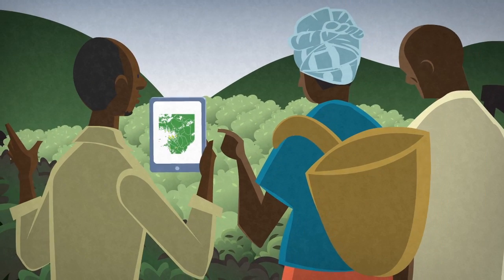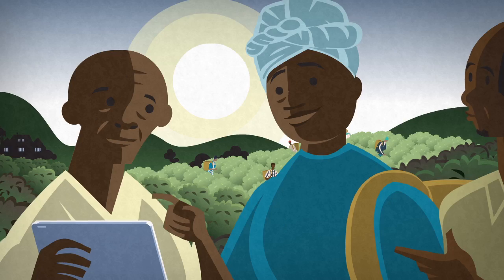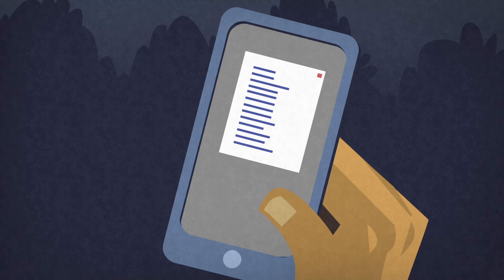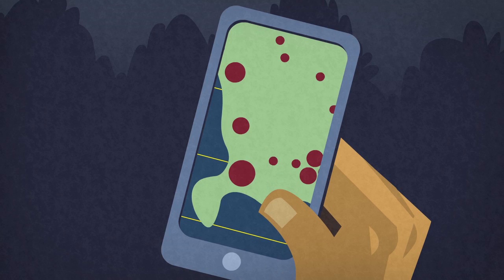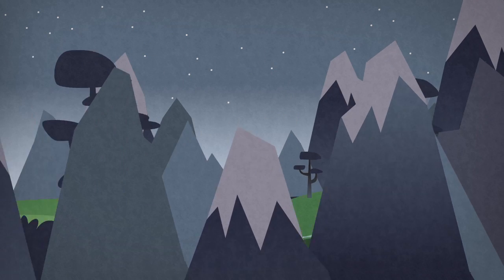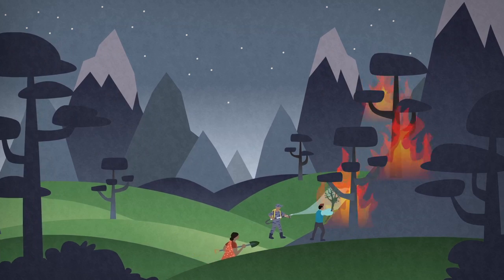In Kenya, satellite mapping predicts potential frost areas, giving farmers time to prepare. In Nepal, near-real-time fire alerts are sent via SMS and email, so forest managers learn more quickly about fires burning in their districts.